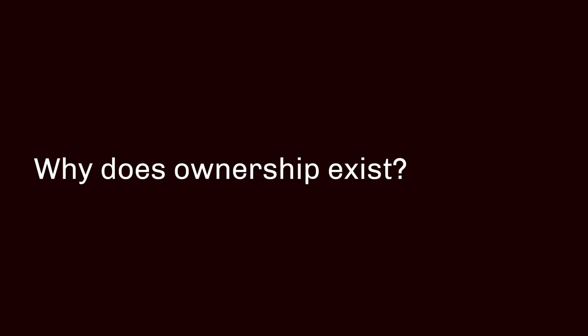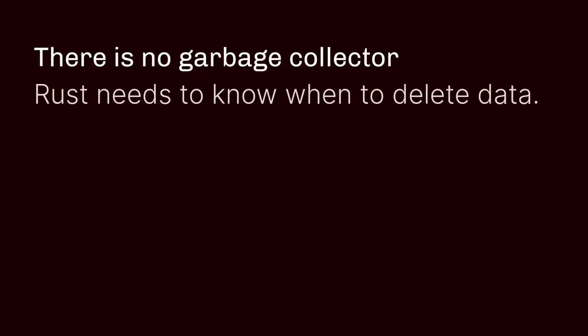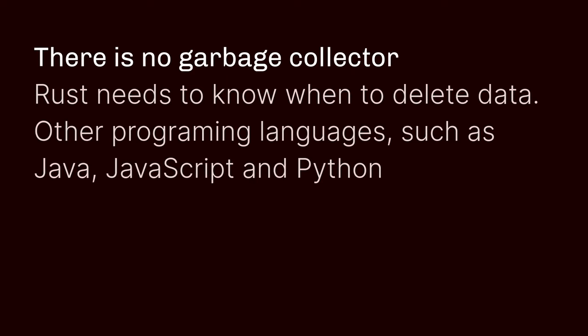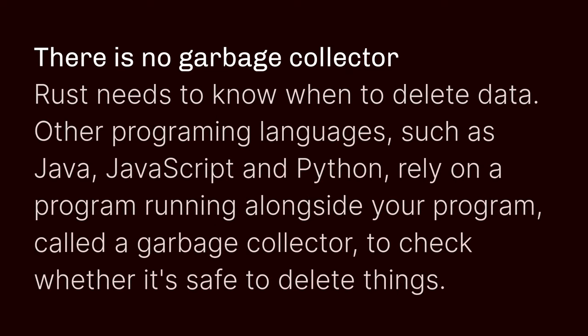This leads to the question: why does ownership exist? In Rust, we don't have a garbage collector. Rust needs to know when it is safe to delete data. Other programming languages such as Java, JavaScript, and Python rely on a program running alongside your program — that's called a garbage collector.